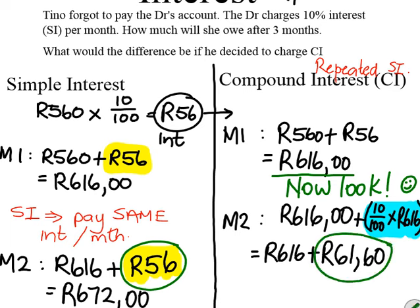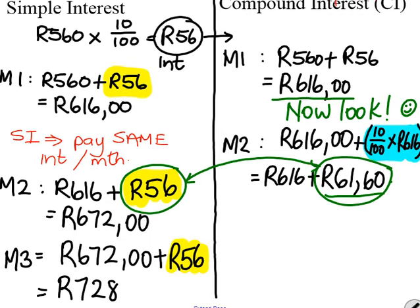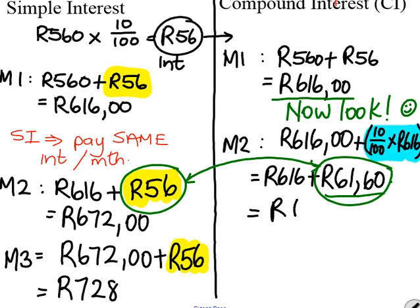In month two, compare your two interests — compound interest is more than the simple interest. When I add those two together, I get 677 Rand 60. This is my new balance.